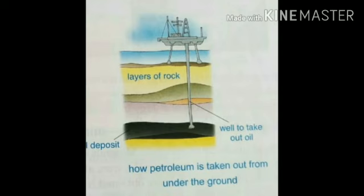By the action of heat and pressure, it changes into petroleum, obtained by digging special wells into the oil bearing rocks. Petroleum is also known as crude oil, rock oil and fossil fuel. The petroleum cannot be used in its natural state, so it is refined and turned into various types of fuel such as petrol, diesel, LPG and kerosene.